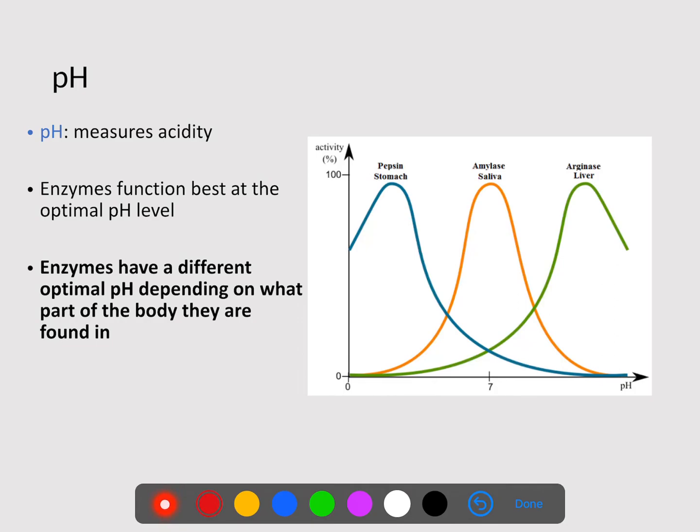So for example, the optimal pH of pepsin, which is found in the stomach, is probably around a pH of three, very acidic. So that makes sense because pepsin is found in stomach acid. Now, the next one we have is amylase. Amylase is probably around 7.5. So amylase is found in our saliva, which is a neutral substance.